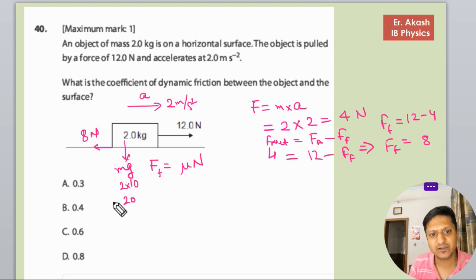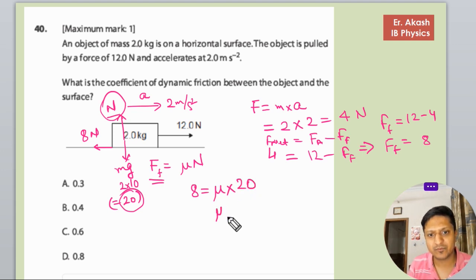N equals 20. The frictional force we have calculated is 8. So 8 equals μ into N. N is 20 because N is always equal to the mass into gravitational force mg. So μ equals 8 by 20, that is 4